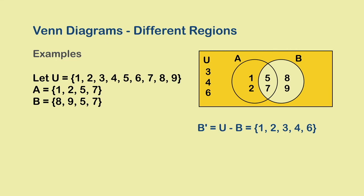This region contains all the elements that are in U but not in B. So, this is U-B or B complement.